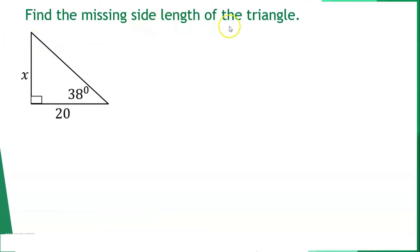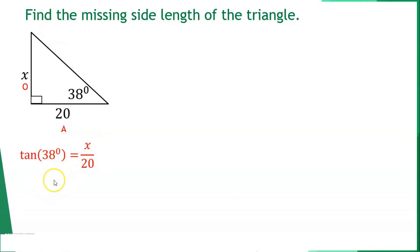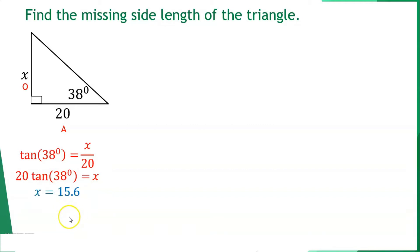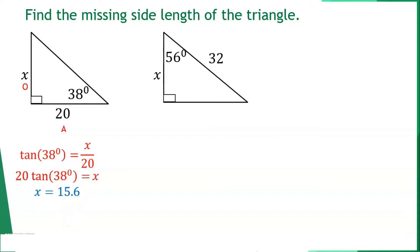Find the missing side length of the triangle. We have 38 degrees as the reference angle, where x is opposite and 20 is adjacent. Using tangent: tan(38°) = x/20. Cross-multiplying gives x = 20 × tan(38°), which is approximately 15.6.